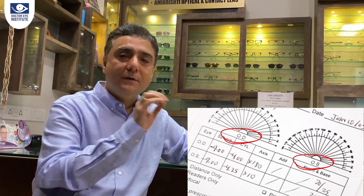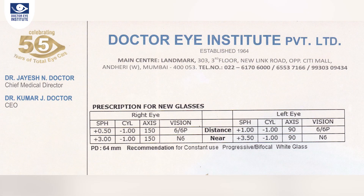When you see a prescription, the first thing to understand is OD and OS. OD means 'oculus dexter,' which means the right eye. OS means 'oculus sinister,' which means the left eye. OU means 'oculus uterque,' which means both eyes. These are the original Latin terms used for the eyes. I'm now going to show you a prescription and explain what each part individually means.